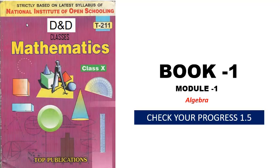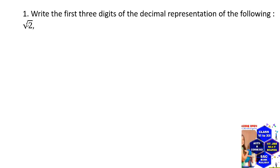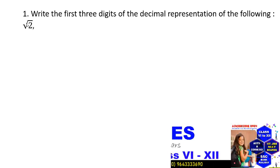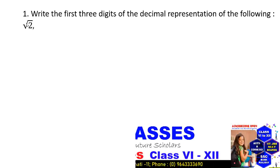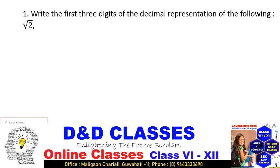Welcome students. Today we will start with Book 1, Module 1, Algebra - Progress 1.5: write the first three digits of the decimal representation of the following. Root 2 - so we have to find the value of root 2.